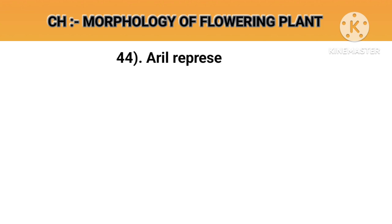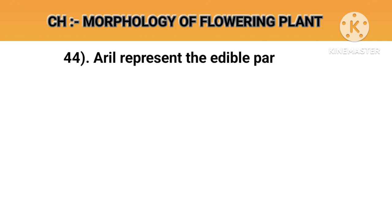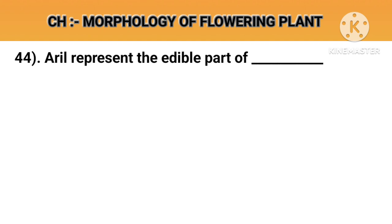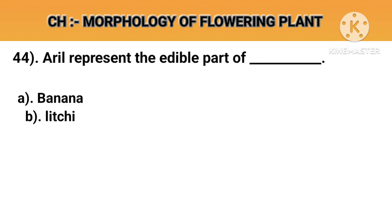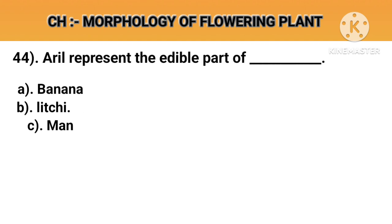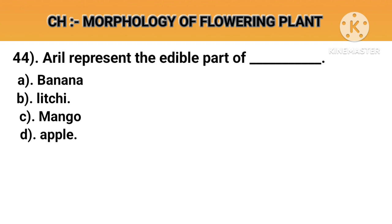Question number 44. Aril represents the edible part of. Option A: Banana. Option B: Litchi. Option C: Mango. Option D: Apple. Answer B: Litchi.